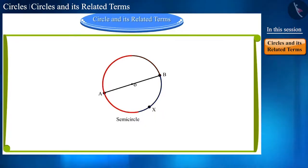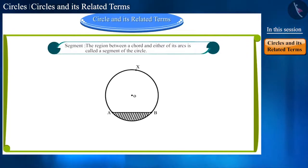Friends, the length of the entire circle is called its circumference. And the region between a chord and either of its arcs is called a segment of the circle.